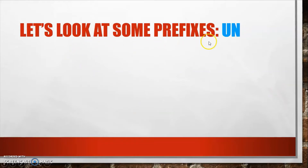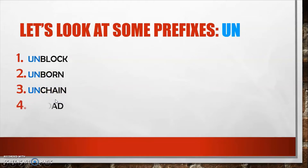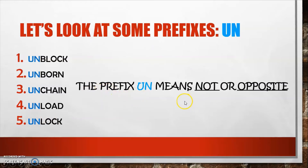The first prefix we're going to talk about is 'un.' Remember, we attach it to the beginning of words. The first word is 'block' — we attach the prefix 'un,' so it becomes 'unblock.' Other examples: 'unborn,' 'unchain,' 'unload,' and 'unlock.'